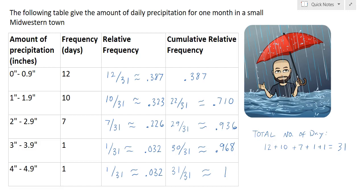So if somebody wanted to know what proportion of the month had less than 3 inches of precipitation, that would just be this number right here, about 94 percent. But if we wanted to know what percentage of the month had between 2 and 2.9 inches of precipitation, we would use the relative frequency, which would be about 23 percent. So you can see advantages to both of these depending on what kind of question we're trying to answer.